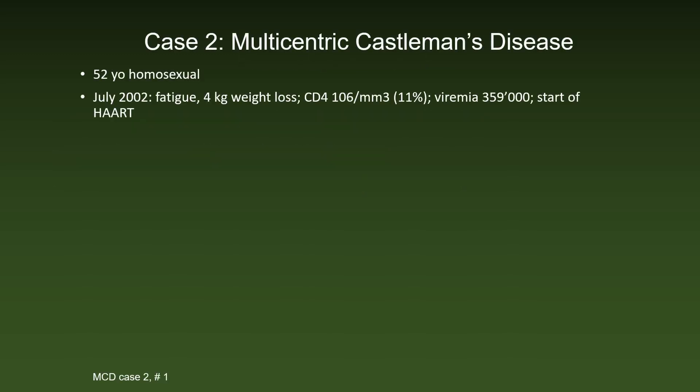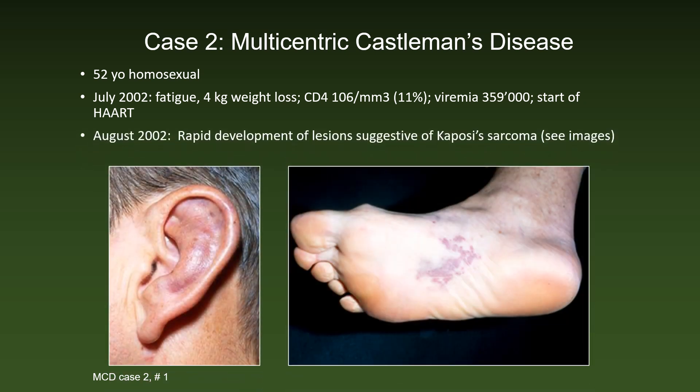Case 2 was a 50-year-old homosexual man who started highly active antiretroviral therapy after an episode of fatigue and a 4-kilogram weight loss, when he had a CD4 count of 176 and an elevated HIV viremia. Shortly thereafter, there was a rapid development of lesions suggestive of Kaposi's sarcoma.